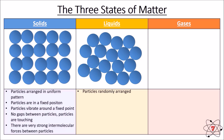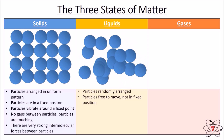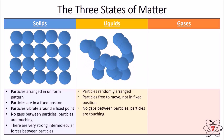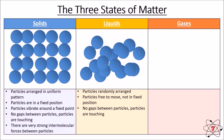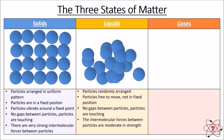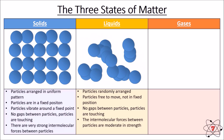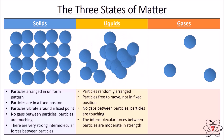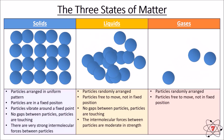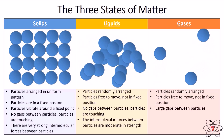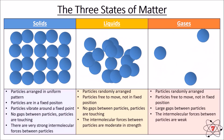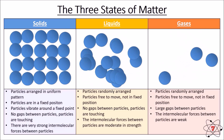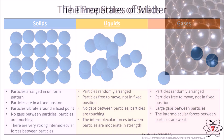In a liquid, the particles are arranged randomly and are free to move — they're not in a fixed position, unlike a solid where particles are arranged uniformly and can only vibrate. There are no gaps between the particles; they are constantly touching, but the intermolecular forces are moderate in strength, so particles can move freely while still being held together. In a gas, particles are also randomly arranged and free to move, but there are large gaps between them because the intermolecular forces are very weak, allowing the particles to spread out and move freely.